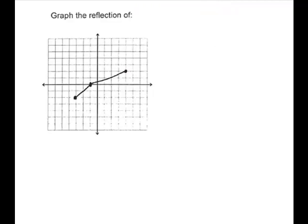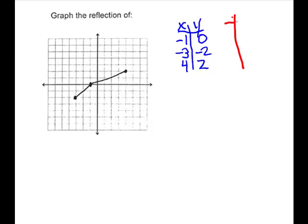Let's do one more. We have three ordered pairs here — we'll make a list of those. We have (−1, 0), we have (−3, −2), and we have (2, 3) and (4, 2). We're going to switch the x's and y's, so this will be the inverse: (0, −1), (−2, −3), and (2, 4).